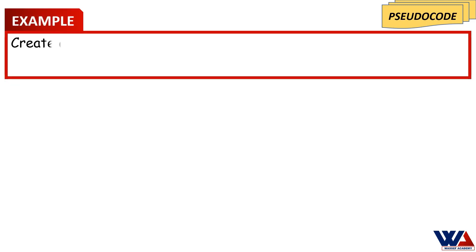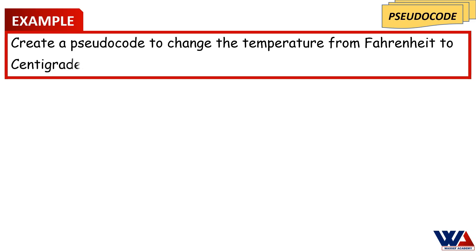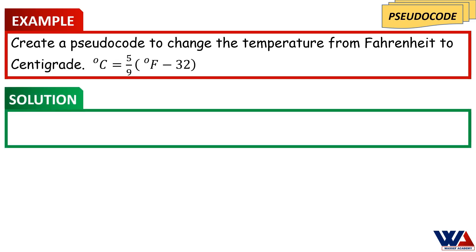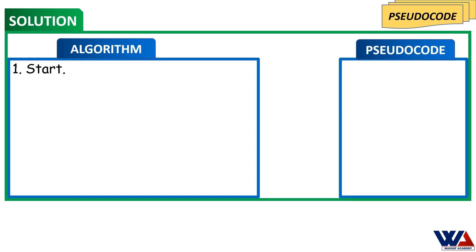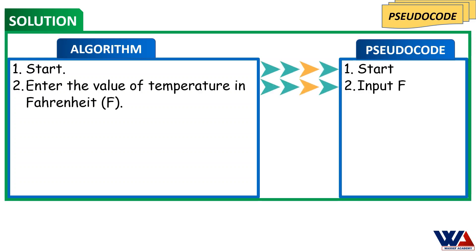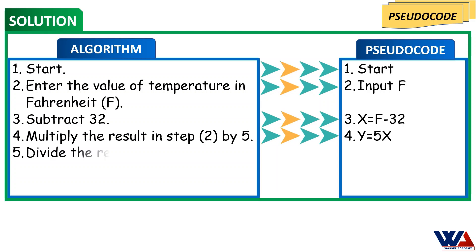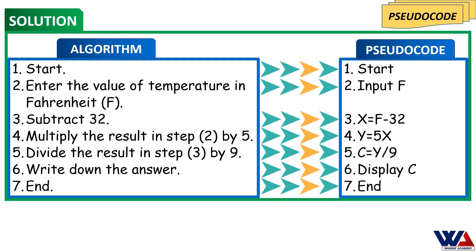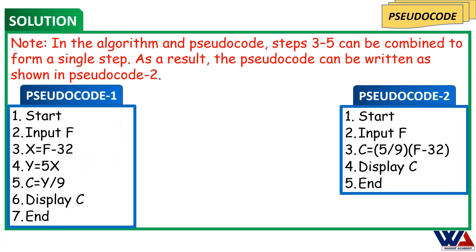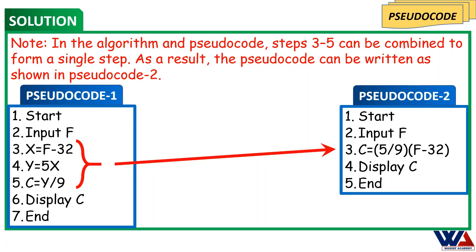Example: Create a pseudocode to change the temperature from Fahrenheit to Centigrade. Using the algorithm created earlier, the pseudocode can be created accordingly. Note that in the algorithm and pseudocode, steps 3 to 5 can be combined to form a single step, and the pseudocode can be written as shown in pseudocode 2.